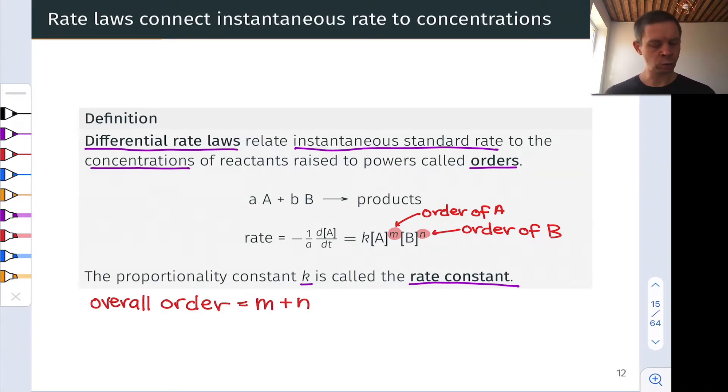We can also talk about the overall order of reaction as the sum of all the kinetic orders of all the reactants. So here, m plus n is the overall order.